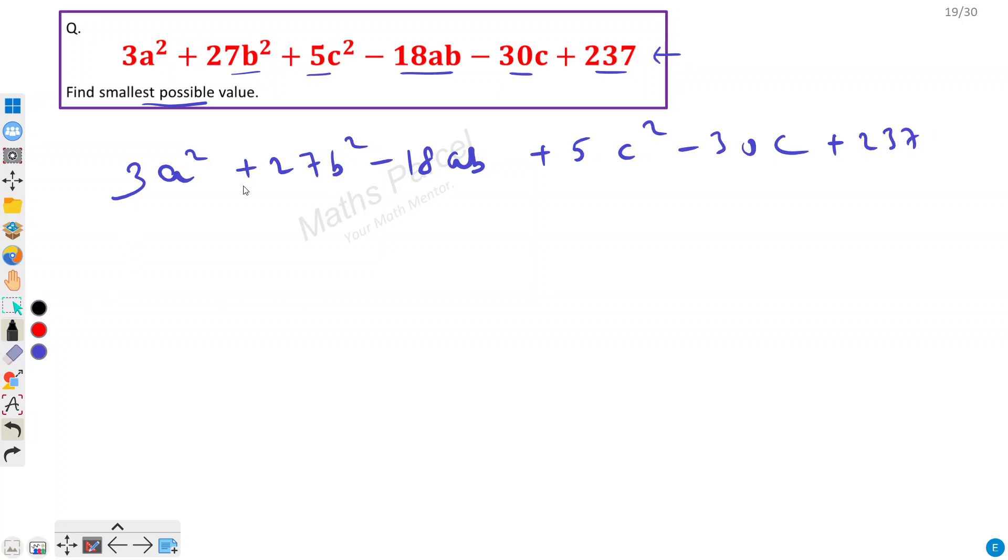So this is the method usually that we follow in finding the maxima and minima for quadratic expressions. Now what does complete the square mean? We will try to form a complete square from these expressions. So how can we find, let's say can we form a complete square from these three? Let's try.